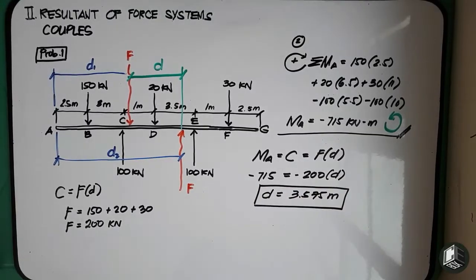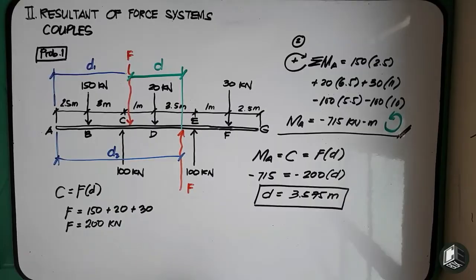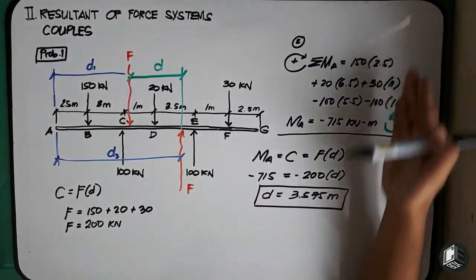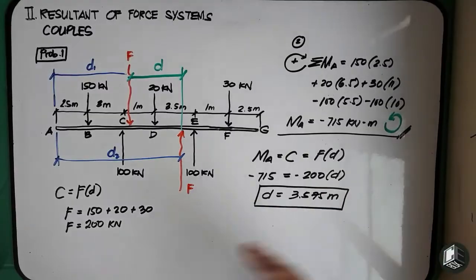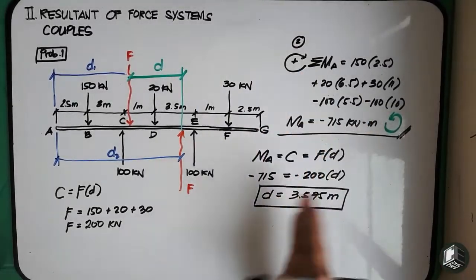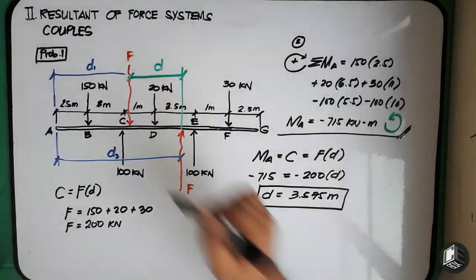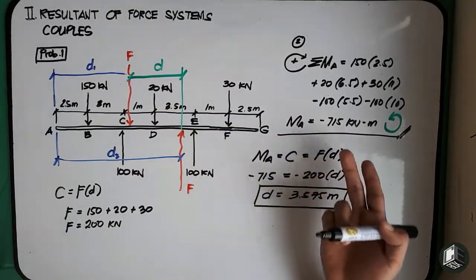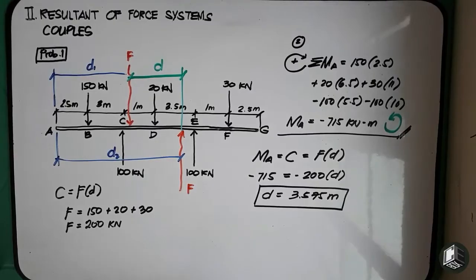So I've shown both solutions, and it's up to you which one to use. The second solution is more concise. But if you use the first solution, you'll better understand the foundational concept of how to get distance d, since it comes directly from the basic concepts of moment and resultant. That is our problem number 1. Thank you for watching.